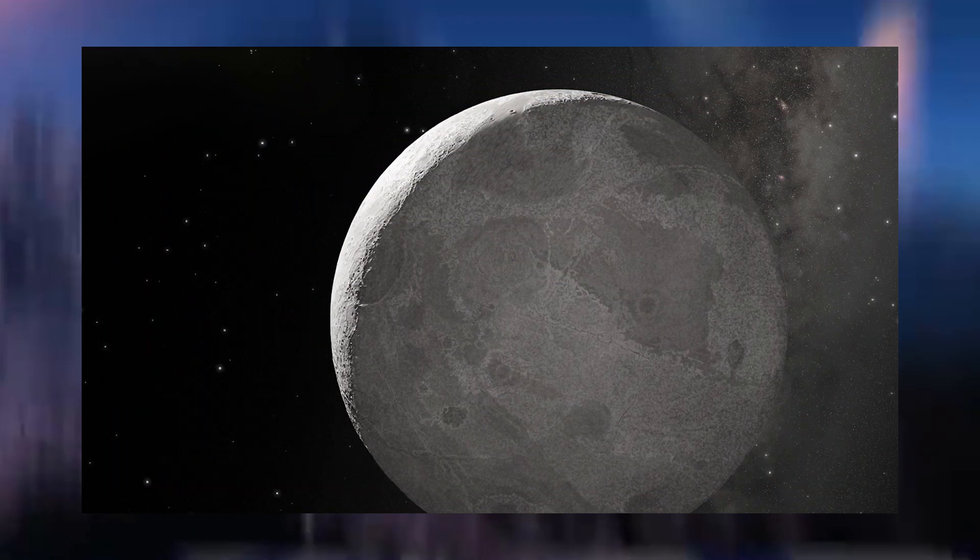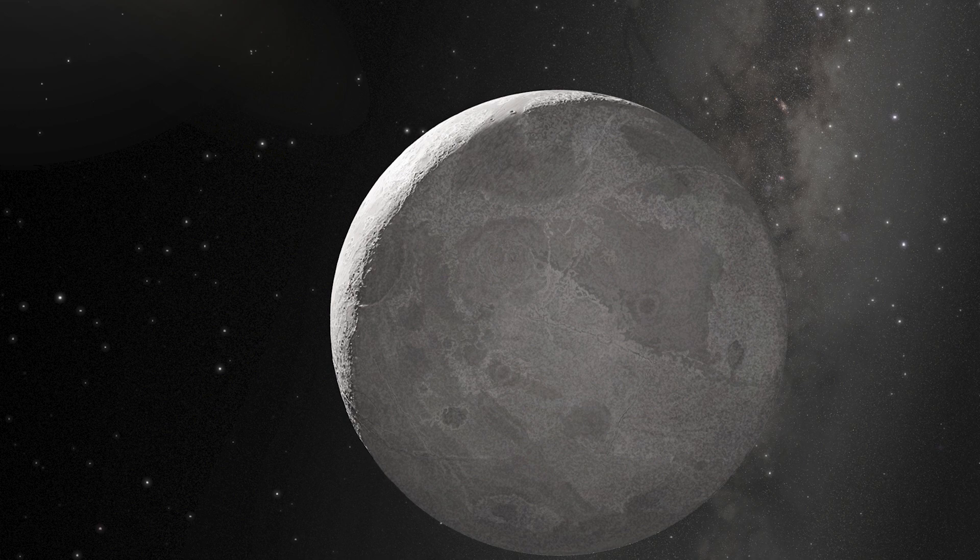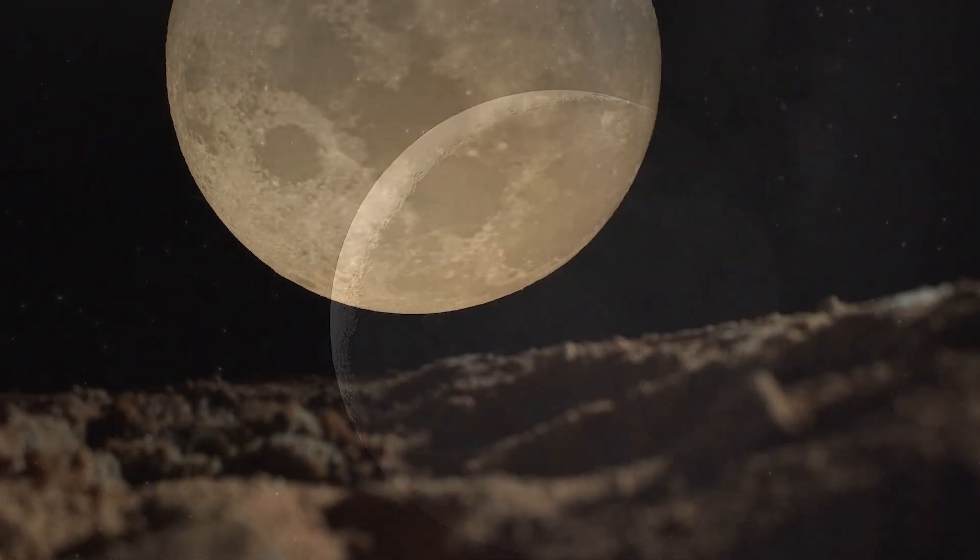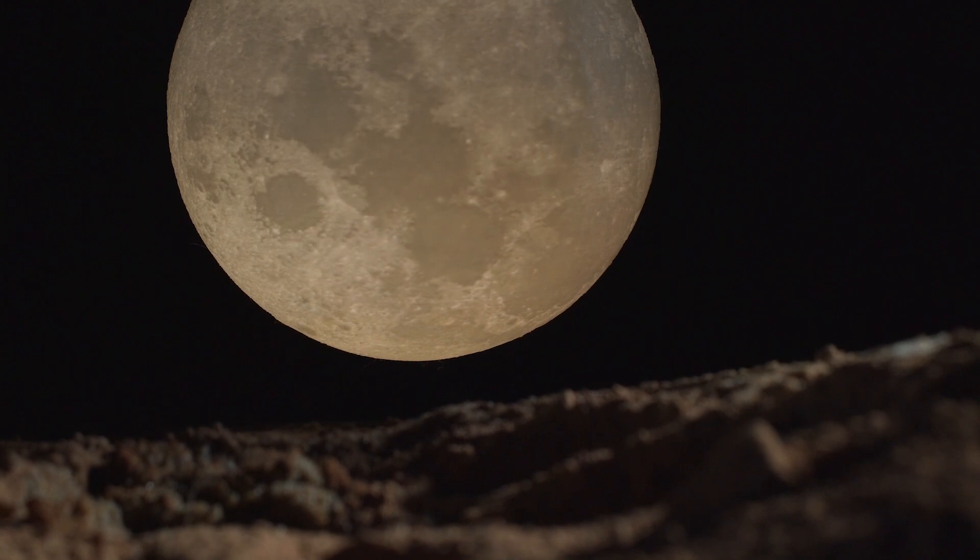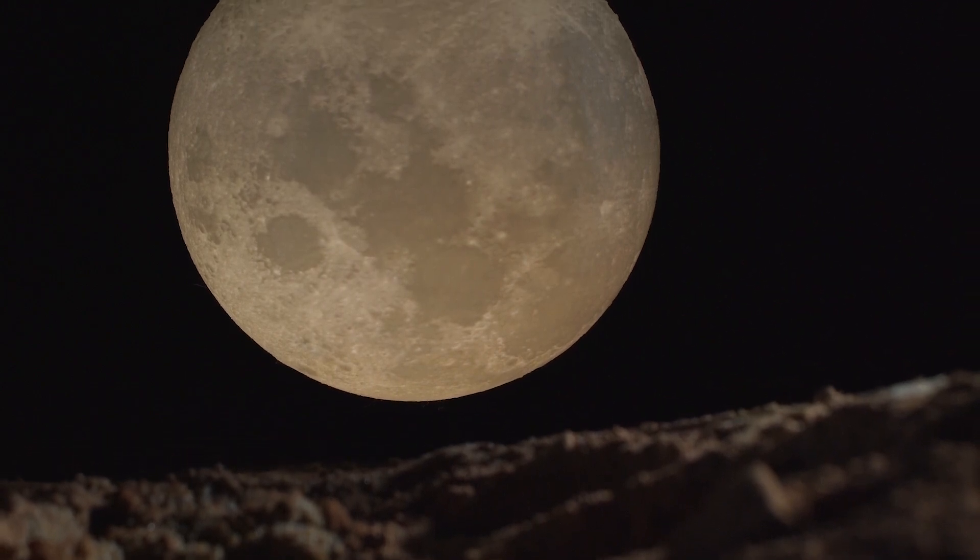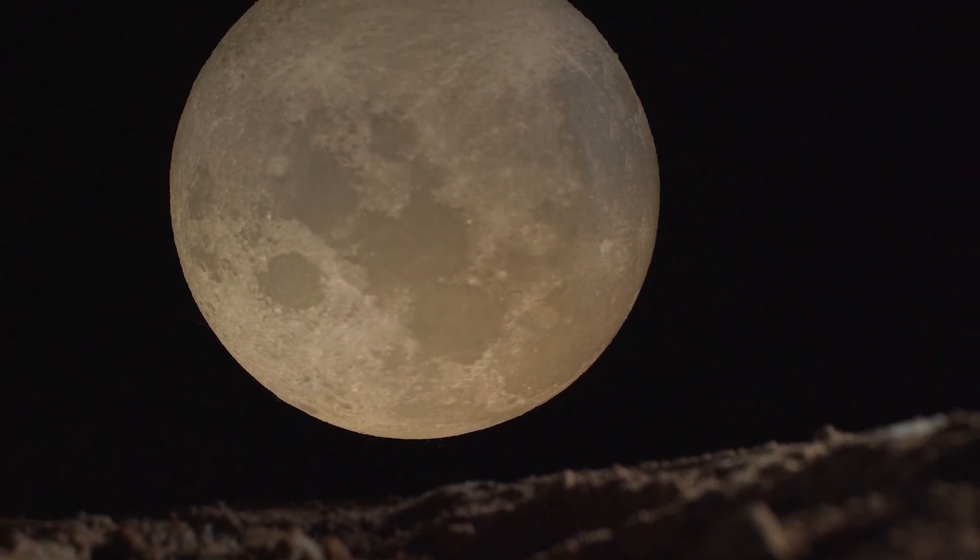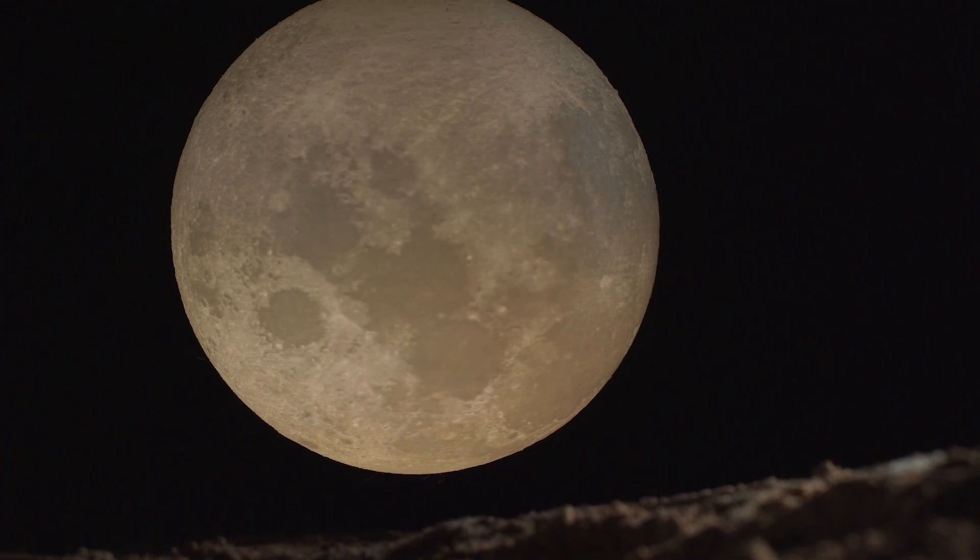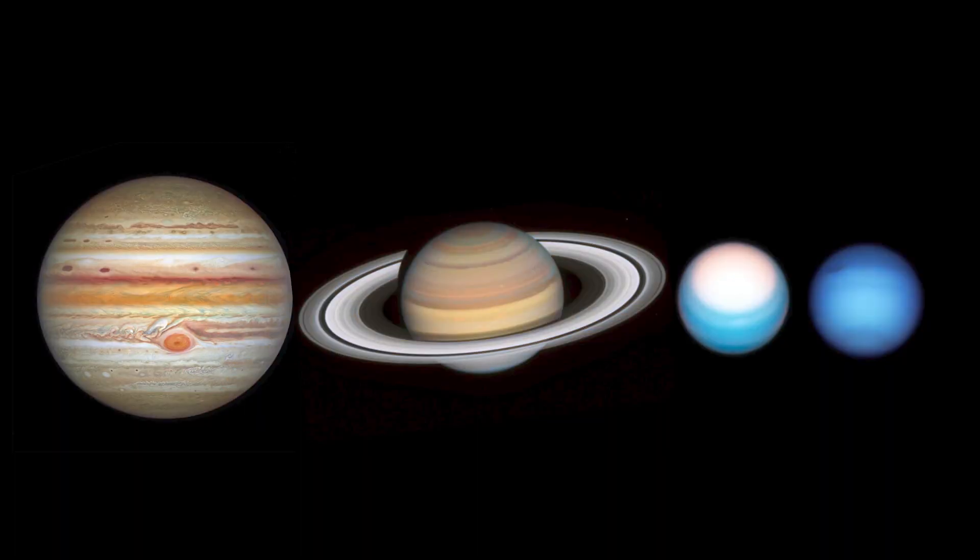For example, finding planet Zeno supports the theory of planetary migration which suggests that the gas giants Jupiter, Saturn, Uranus, and Neptune formed much closer to the sun before migrating outwards. This theory explains the Kuiper's belt concentration of smaller objects and helps us to understand the early evolution of our solar system.